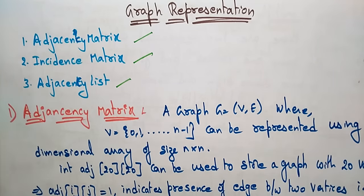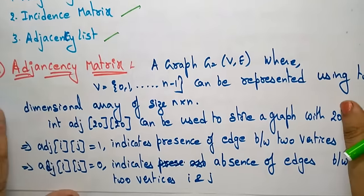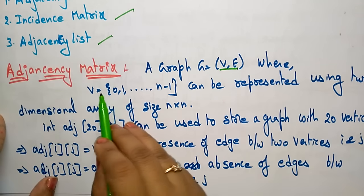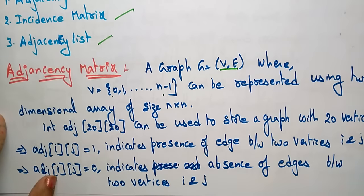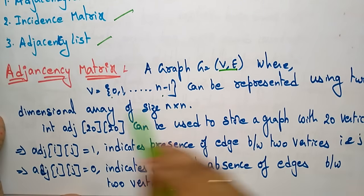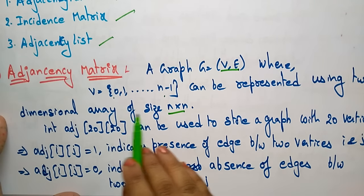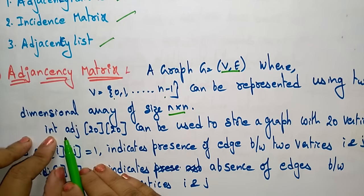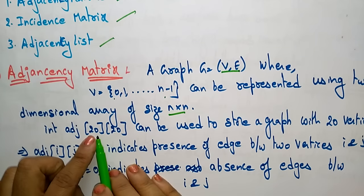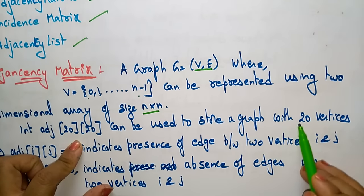Let me explain what these types of graph representations are. Starting with the adjacency matrix: a graph G having a set of vertices and edges, where V is from 0 to n-1, meaning there are up to n-1 vertices, can be represented using a two-dimensional array of size n by n. For example, int adjacent[20][20] can be used to store a graph with 20 vertices.